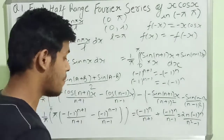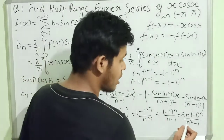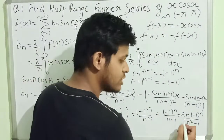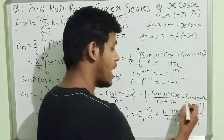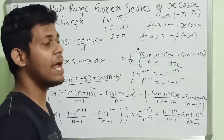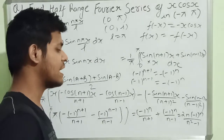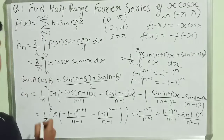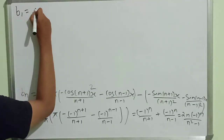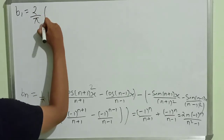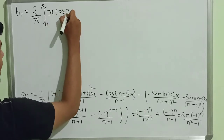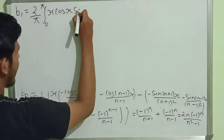So we have obtained the general value of b_n. We can now put this value into the series to expand it. However, notice that when n equals 1, b_n becomes undefined because the denominator (n²-1) becomes 0. So we need to determine b_1 separately. For b_1, we compute: 2 upon π times the integral from 0 to π of x·cos(x)·sin(x) dx.